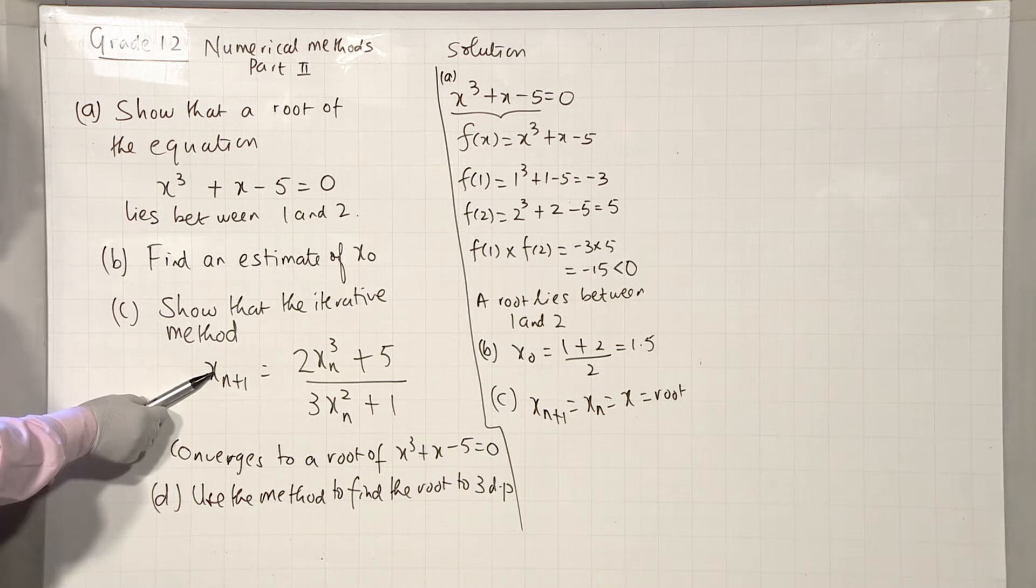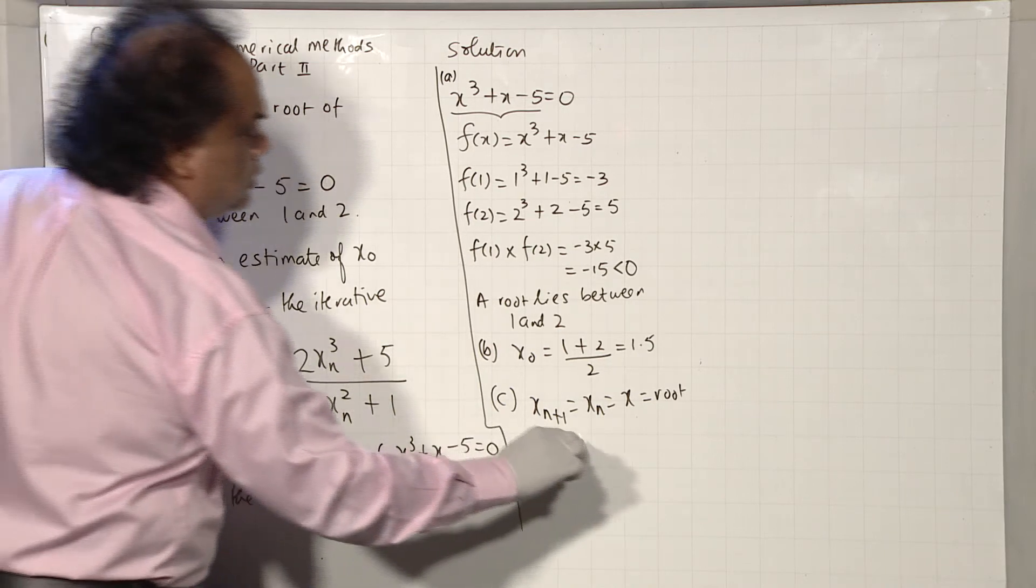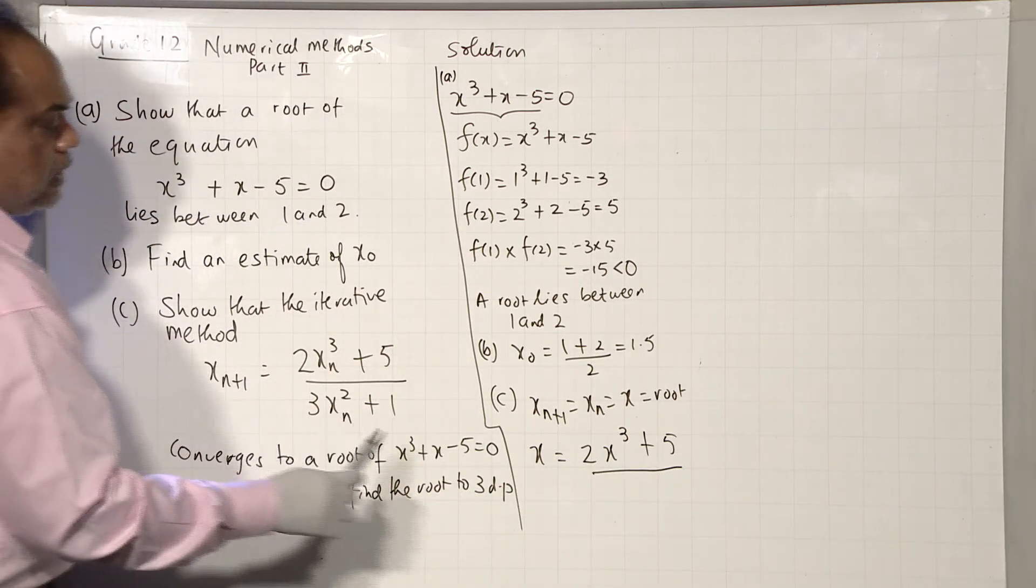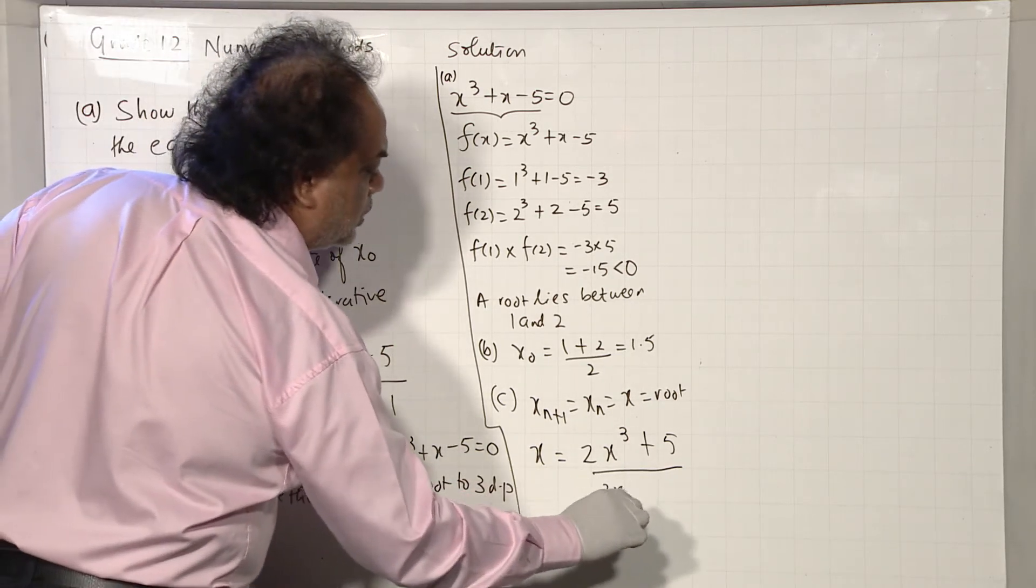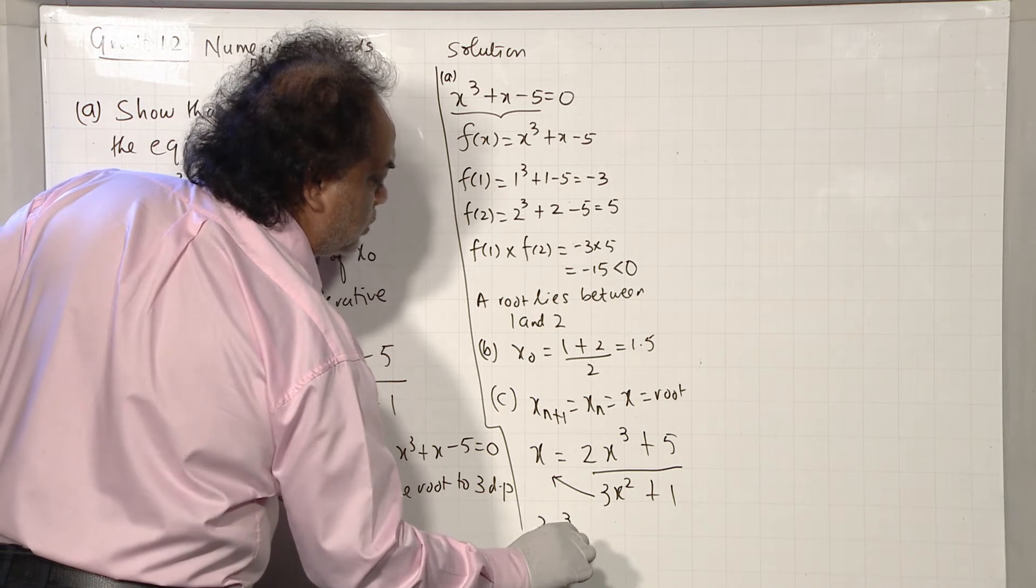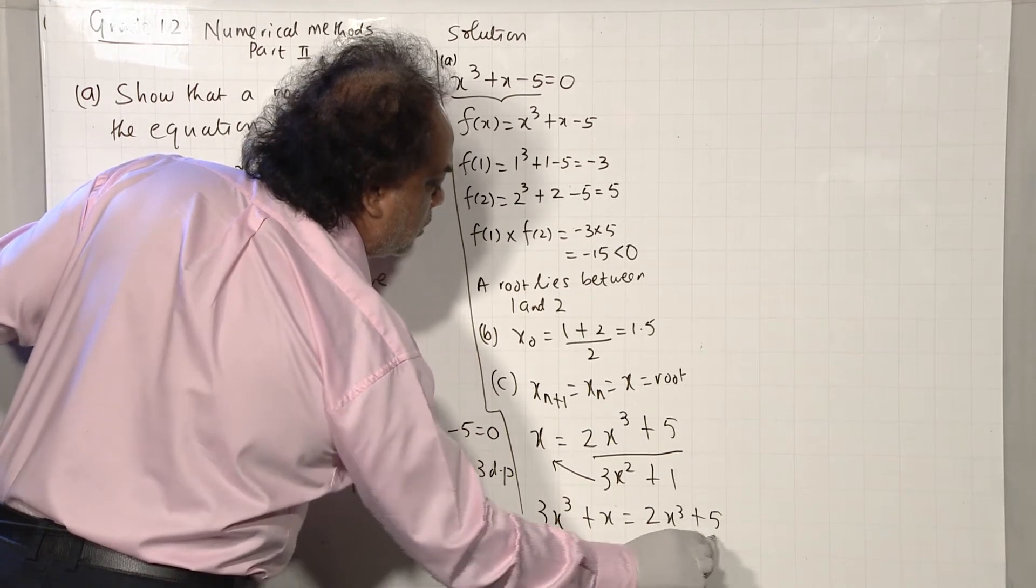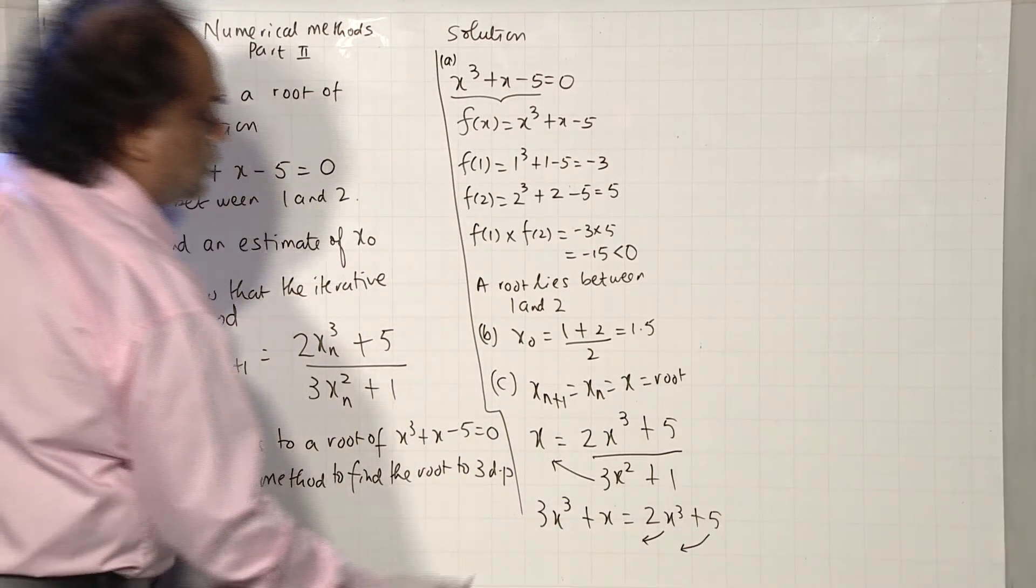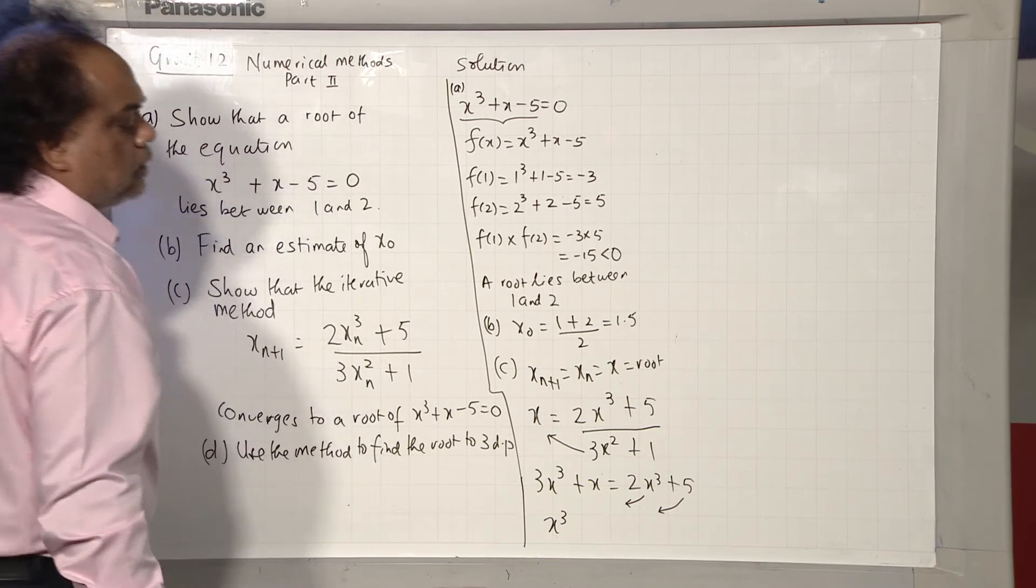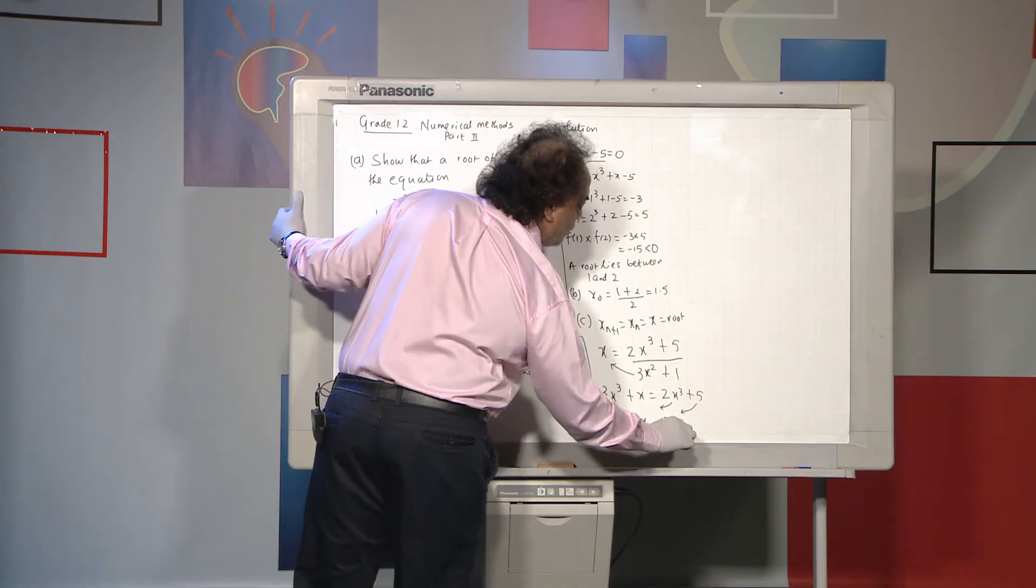So if this iterative method that has been given to us converges to the root of the equation, what I'm going to do then, replace xₙ₊₁ by x, which is the root, xₙ by x, and then here xₙ by x. We cross-multiply, 3x³ plus x equals 2x³ plus 5, transfer all the terms on the right-hand side. 3x³ minus 2x³ leaves me with x³, plus x is here, plus 5 comes here, minus 5 equal to 0.